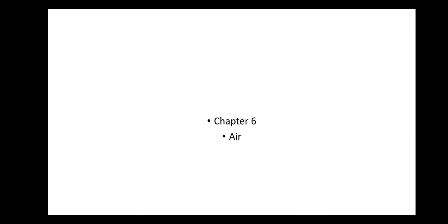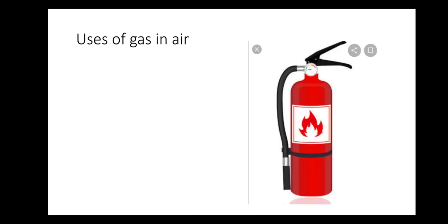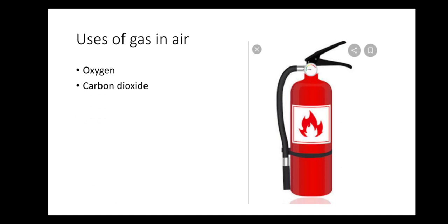We are doing chapter 6, Air, and we are learning about the uses of gas in air. You know that there are four components of air. They are oxygen, carbon dioxide, nitrogen, and water vapor.